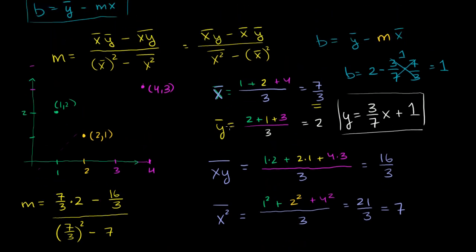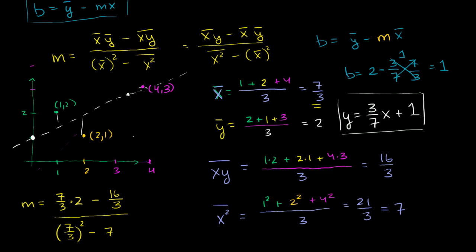Let's graph this. Our y-intercept is 1, right over here. The slope is 3/7, so for every 7 we run, we rise 3 — or for every 3½ we run, we rise 1½. Drawing the line, it's going to look like that. It won't go directly through any of those points, but we have shown that this formula minimizes the square distances from each of these points to that line.